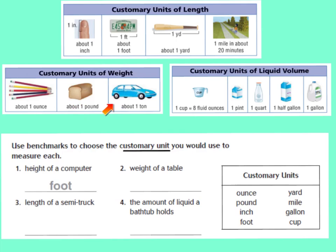Last we're going to talk about customary units of liquid volume — that's when you pour liquid into a container. The five different customary units we'll explore today start with the cup. A cup is 8 fluid ounces, and if you've ever drunk out of a glass, that's about the measurement of a cup.